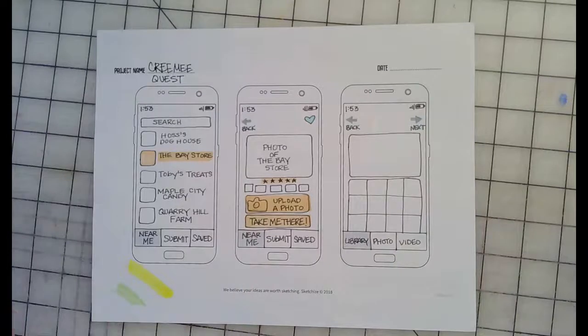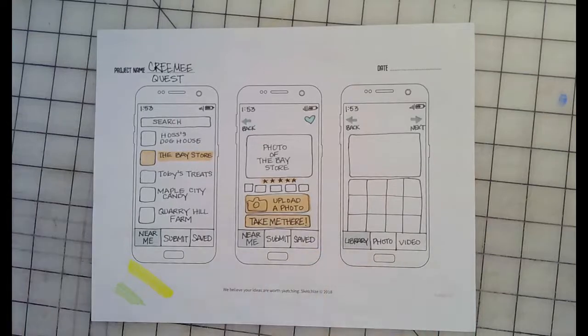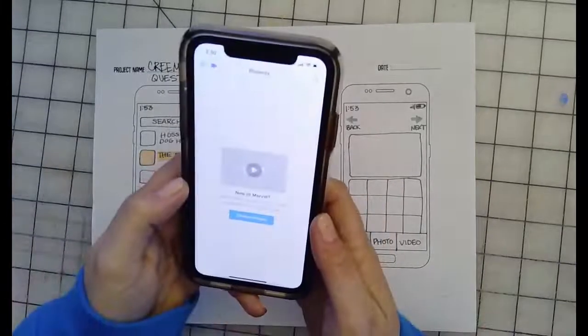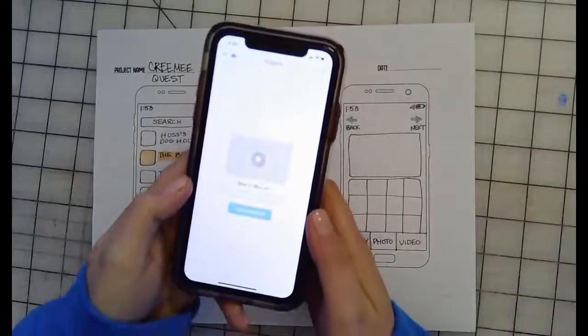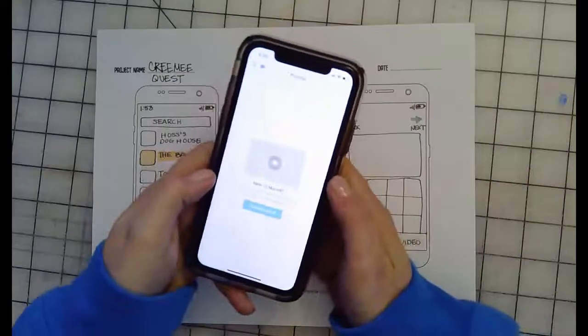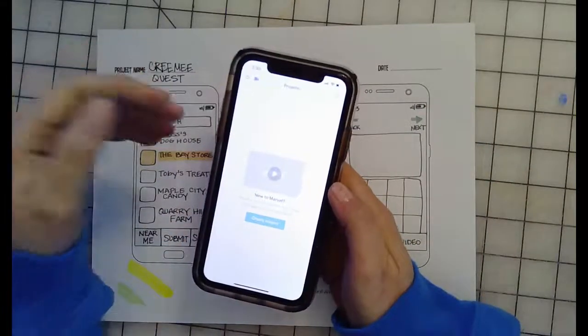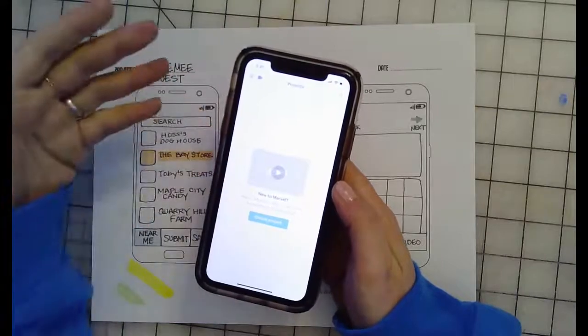Now that you have your drawing of your app done and your paper prototype, you are going to start to create the actual mobile version of the prototype. You're not actually building an app, you're just making a version of the prototype that you can tap through just like you would if it were an actual app. You're not writing code or anything like that.